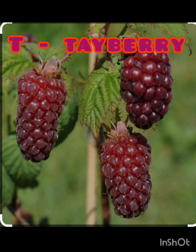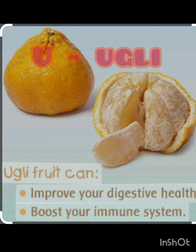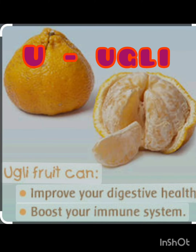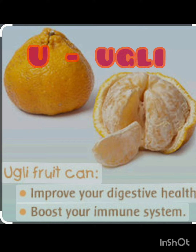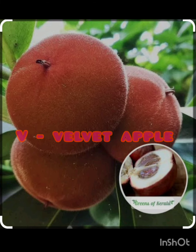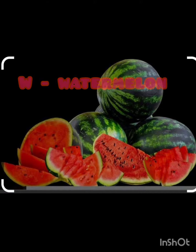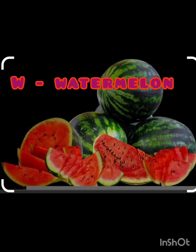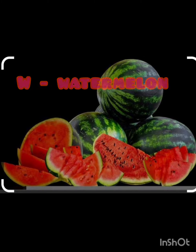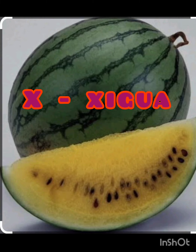U for ugly fruit, V for velvet apple, W for watermelon, X for xylocarp.